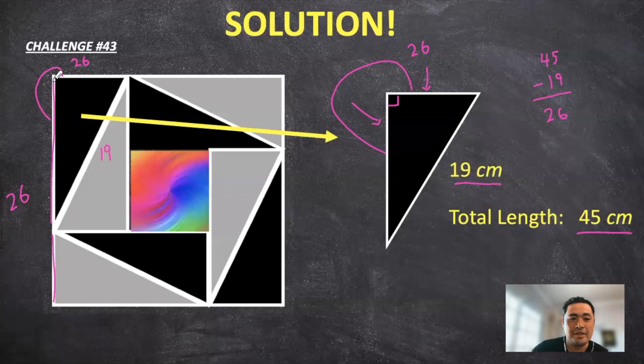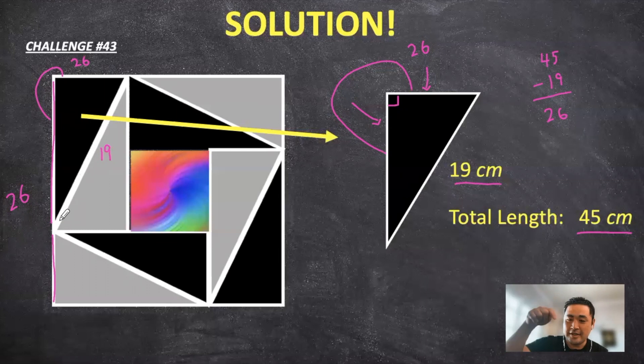So now we know the sides of the big square, excuse me, which is 26, and the side of the smaller square, which is equal to 19 centimeters. Can you think about how we can solve it from here? I'm going to give you five seconds. Here's the countdown. Pause the video if you want to think about it on your own. And let's dive right into the solution.